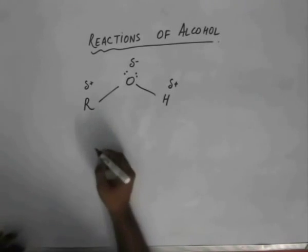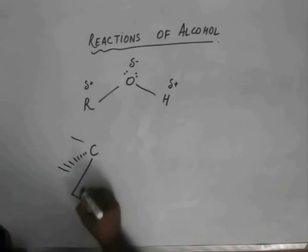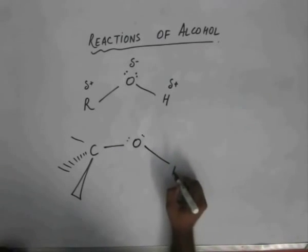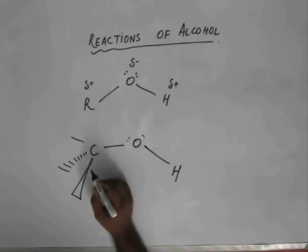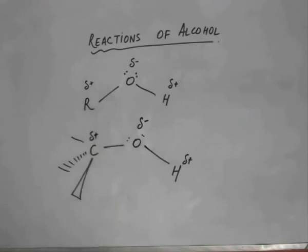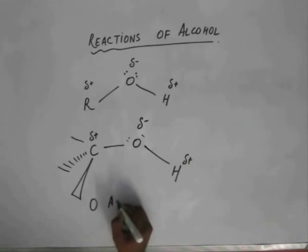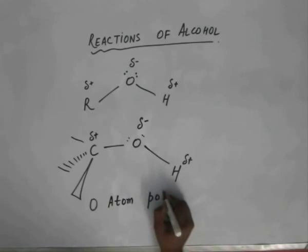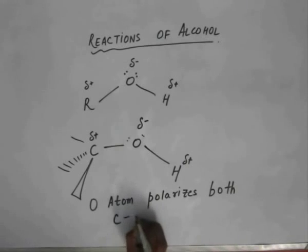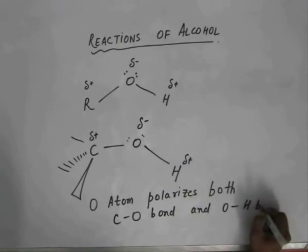To be more specific, the sp3 hybridized carbon atom — this gets a delta minus charge on oxygen, and this hydrogen gets delta plus, and so does this carbon atom gets a delta plus charge. The oxygen atom polarizes both the CO bond and the OH bond.